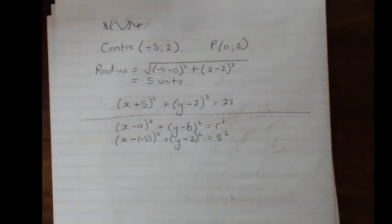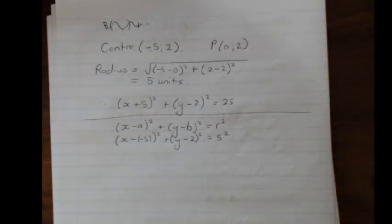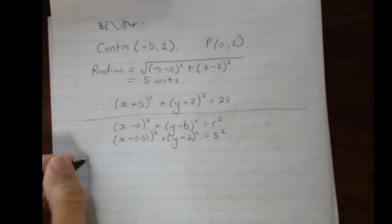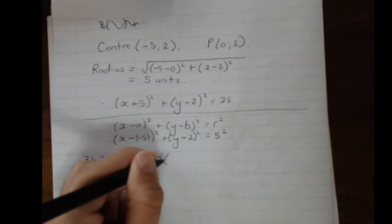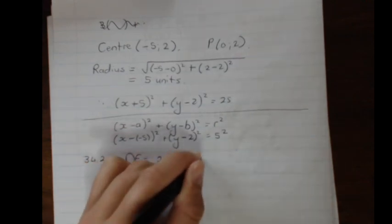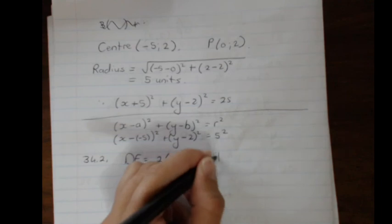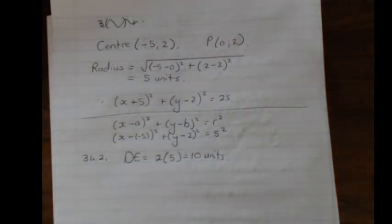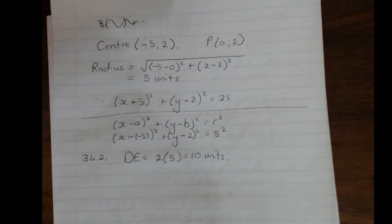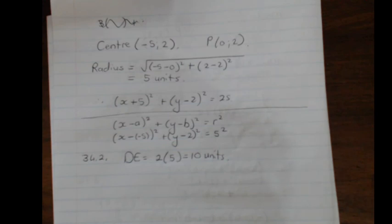Question 34.2 asks for the length of diameter DE. Since the radius is 5, the diameter is twice the radius, which is 10 units. I hope this helped and I hope you enjoy analytical geometry as much as I do. Good luck preparing and enjoy your lockdown, be safe.